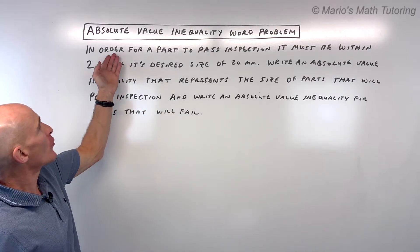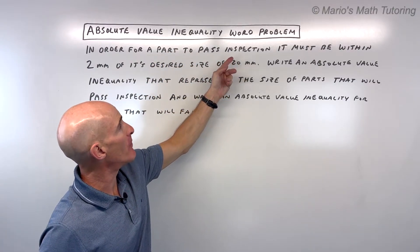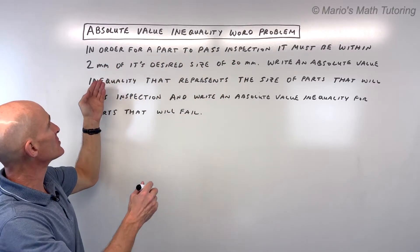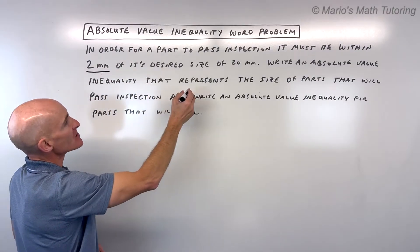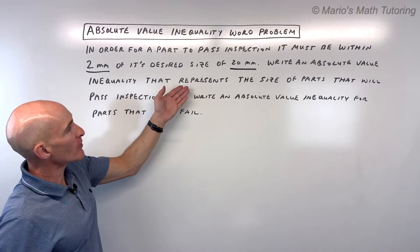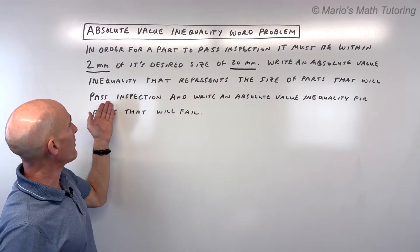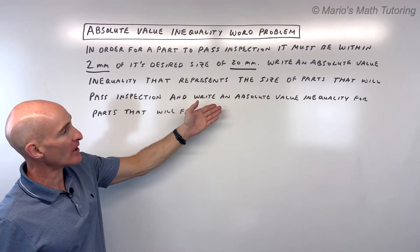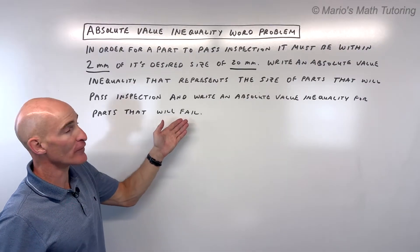The problem states: In order for a part to pass inspection, it must be within 2 millimeters of its desired size of 20 millimeters. Write an absolute value inequality that represents the size of parts that will pass inspection and write an absolute value inequality for parts that will fail.